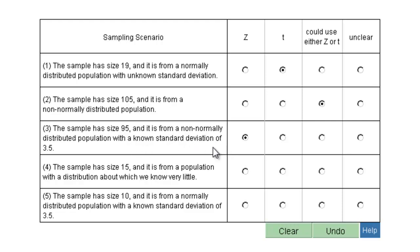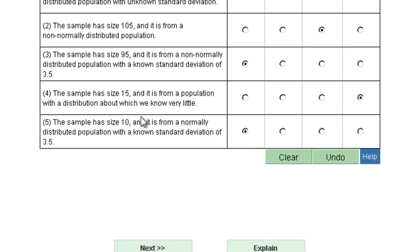Number four: the sample has a size of 15, from a population about which we know very little — that's an unclear one. And this last one: sample size 10, normally distributed, known standard deviation. If it's known, it's Z. Known and normal is always Z.